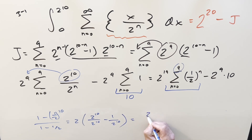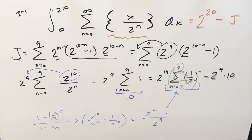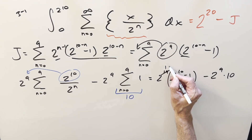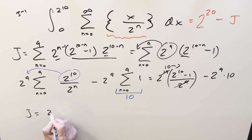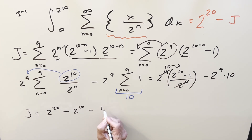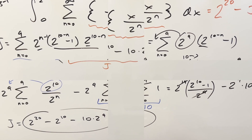For the finite geometric series: (1 − (1/2)^10) over (1 − 1/2). The denominator is 1/2, which we flip to get 2, giving us 2 times (1 − 1/2^10). Writing with a common denominator: (2^10 − 1) over 2^9. Plugging back in, the 2^9 factors cancel, leaving 2^10 − 1 from the first sum. So J = 2^20 minus (2^10 − 1) times 2^9, distributed as 2^20 − 2^10·2^9 + 2^9... working this out gives J = 2^20 − 2^10 minus 10 times 2^9.